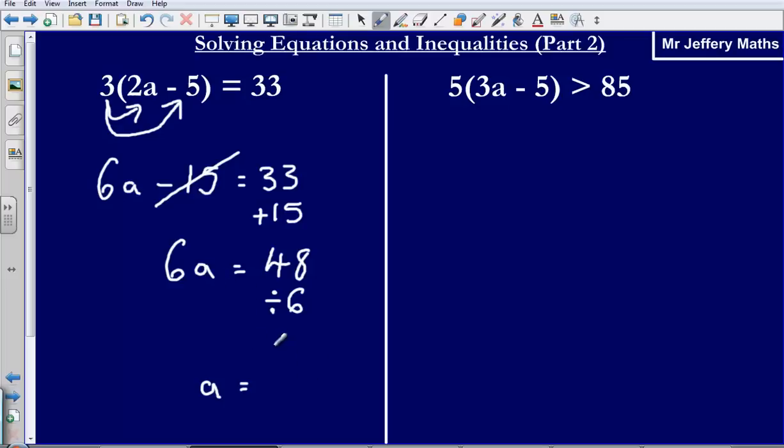And so dividing by 6, 48 divided by 6, that's going to give me 8. I can think of this as I've just divided by the number in front of the letter. So my final answer is simply a equals 8.